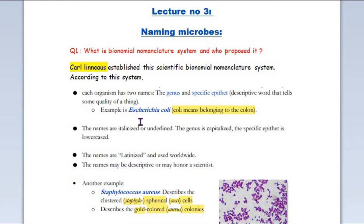These are Latin words — Escherichia coli, Staphylococcus aureus — these are all Latin words. The name is either descriptive or named after a scientist. The 'coli' is a descriptive word referring to the colon, and 'Escherichia' is named after a scientist. The name comes from that scientist.